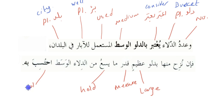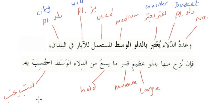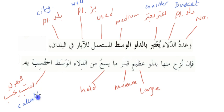احتسبة is from باب احتسبة يحتسبة — this is مجهول and it has the meaning to calculate.